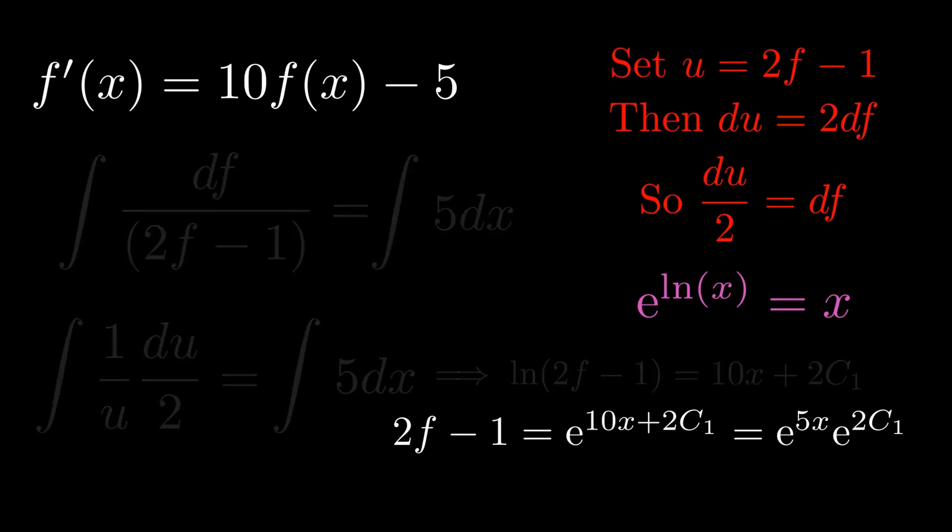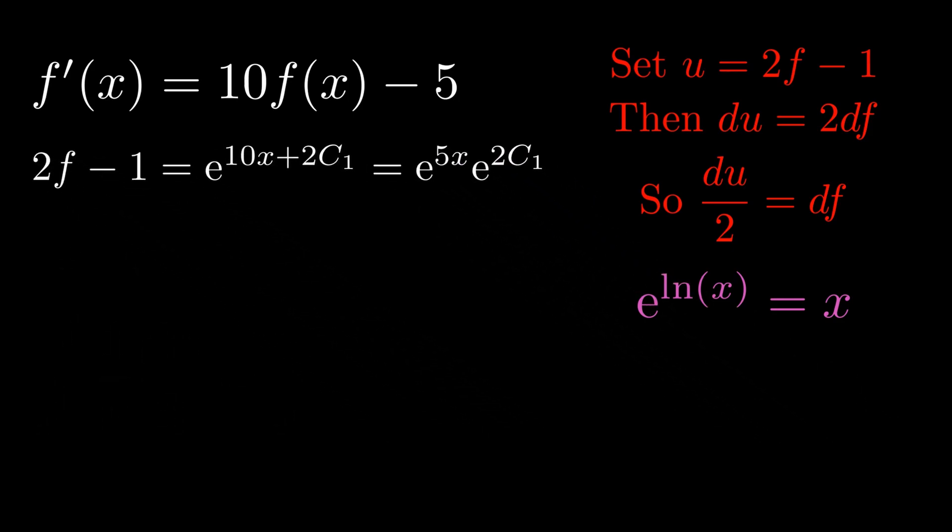Now what we want to do is rewrite e raised to 2c1 as c2. It's just a little bit neater to do so. So if we do that and we add 1 to both sides of our equation and divide by 2 we get the following final answer for f.